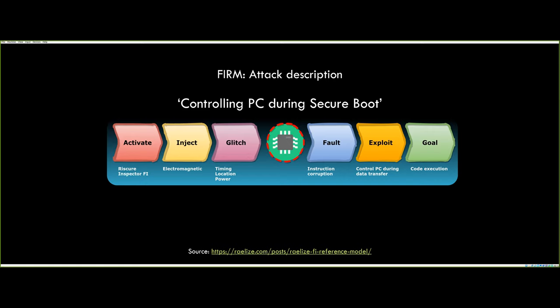Using the fault injection reference model, everything is the same as before — we just changed the probe location, which changed the type of fault generated because we are triggering a different hardware vulnerability. The previous location could skip a check; this new vulnerability causes instruction corruption that, statistically, allows us to corrupt the memcpy instruction so that data from flash loads into the return address register A0 — giving us full program counter control during the data transfer, and thus code execution before the bootloader finishes copying.